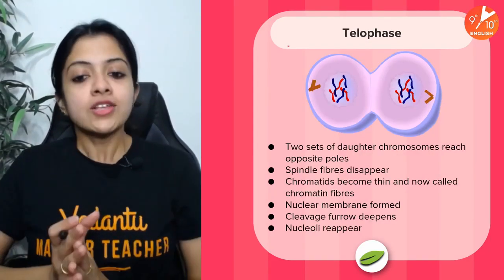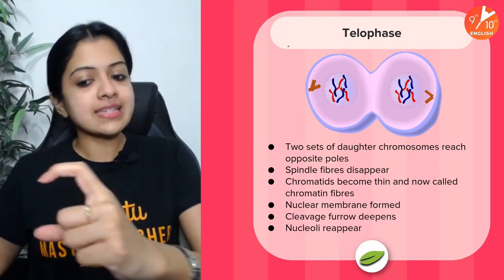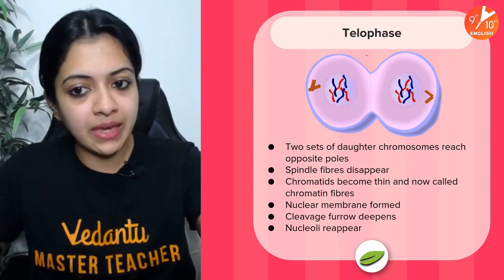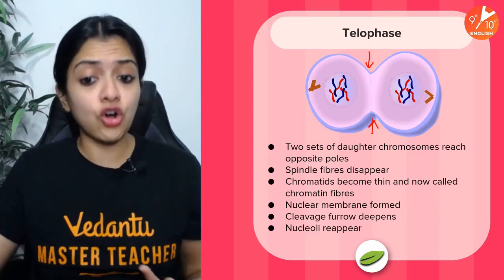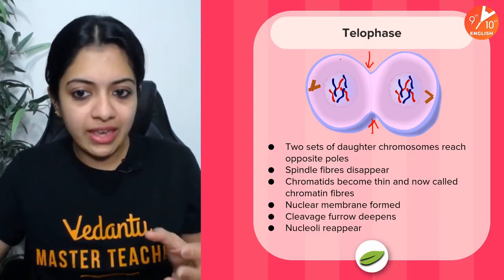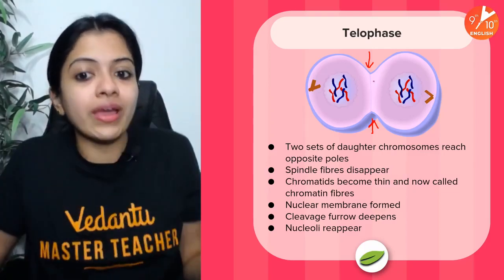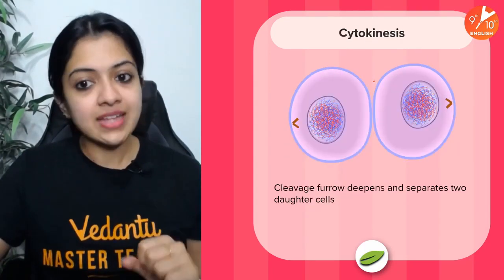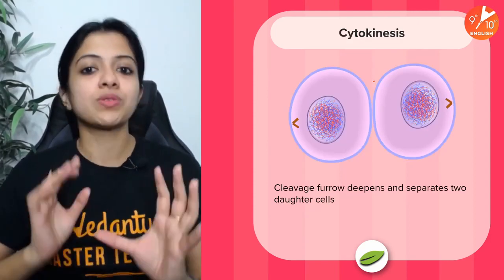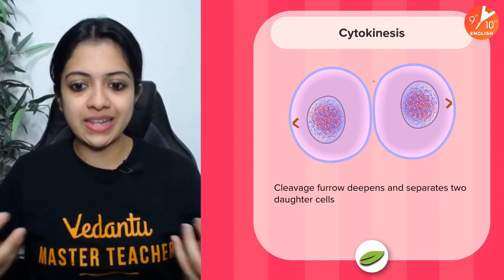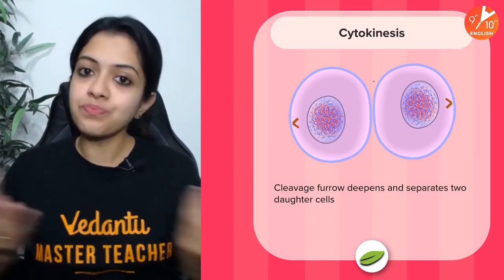Then comes telophase — 'telo' means end or tip. The two sets of daughter chromosomes have reached the opposite poles, and the cleavage furrow is becoming deeper in the middle. The nuclear membrane is reformed and the nucleoli reappear, preparing to make two independent cells. This is followed by cytokinesis — 'cyto' meaning cytoplasm, 'kinesis' meaning division — where the cleavage furrow deepens further, separating into two daughter cells.